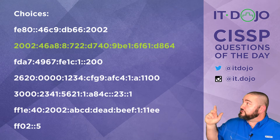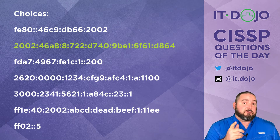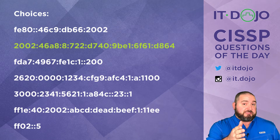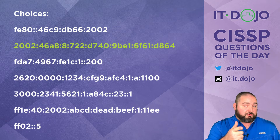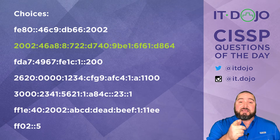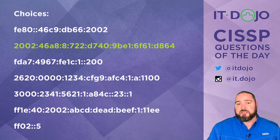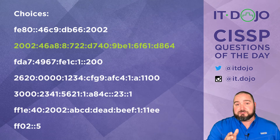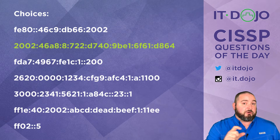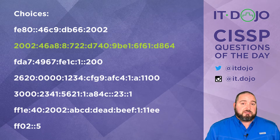Next address: 3000:0234:1... Everything looks great — 3000 is a globally routable prefix, and anything starting with a 2 or 3 is globally routable. However, if you look closely, the double-colon notation is used twice in the address, and that is a fatal flaw in IPv6 addressing. You are allowed to use double-colon notation once to represent a run of zeros, but you may not use it a second time in the same IPv6 address. So no, not correct.